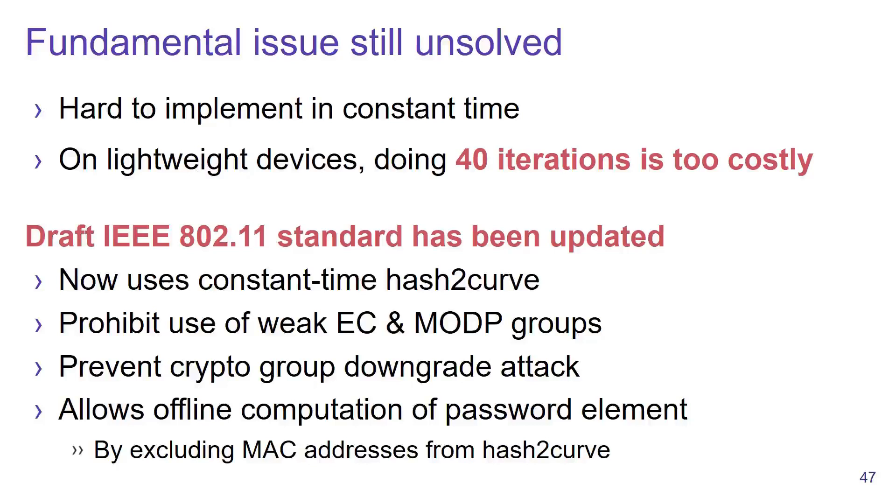They are now suggesting the use of a constant-time hash-to-curve algorithm. They are prohibiting the usage of weak elliptic curves. They are preventing crypto group downgrade attacks and confirming the password element.